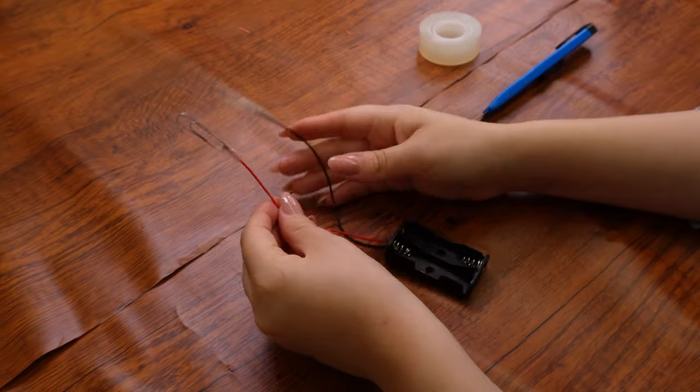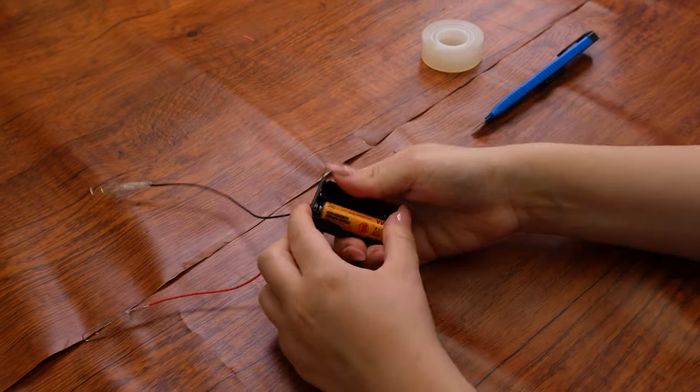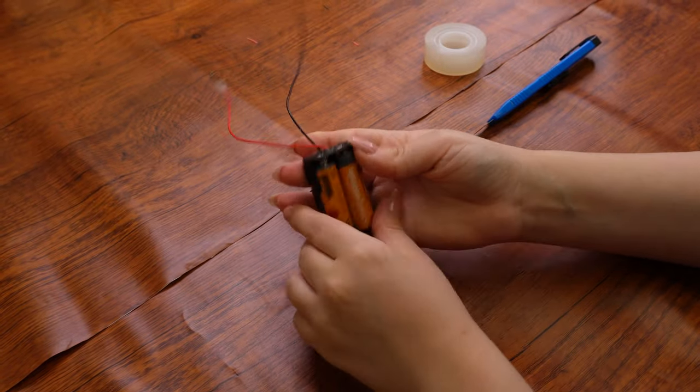Next, put the two AA batteries into the battery pack. We want to make sure they are facing the right way, so we'll check that the plus side of each battery is facing the plus side in the pack, and the same with the minus sign.